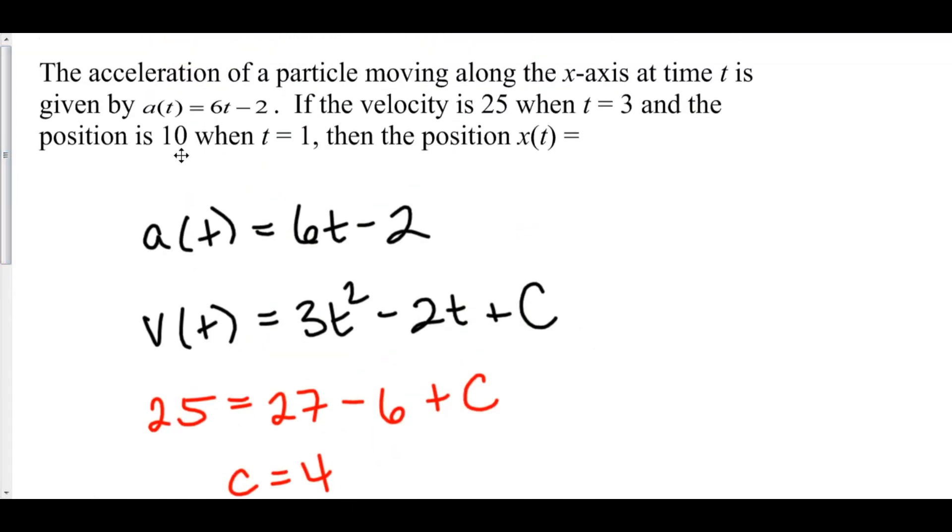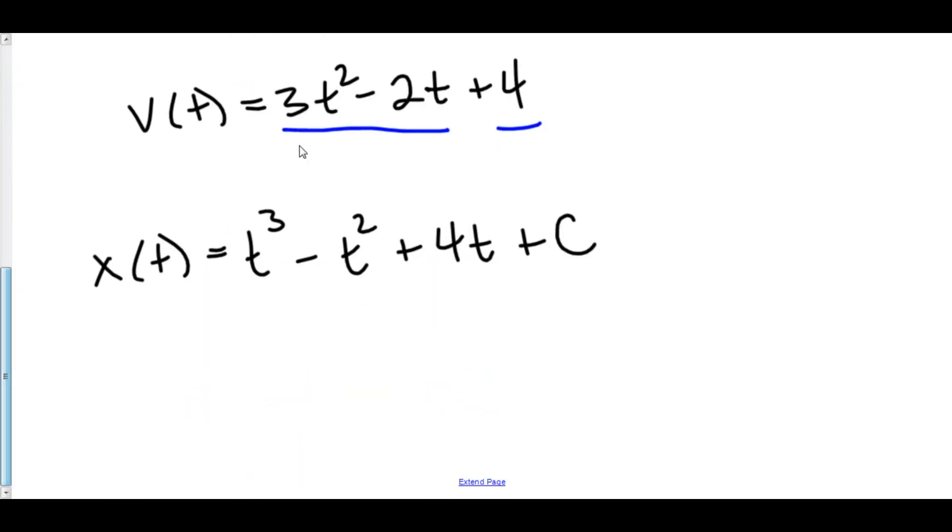And they told us that the position is ten when t equals one. So let's plug that in. We know that our position is ten when t equals one. That's one minus one plus four plus c. So one minus one is zero, plus four is four. Ten minus four is six, so that means that our initial position is six.